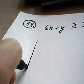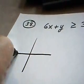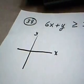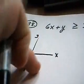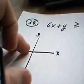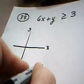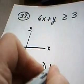6x plus y is greater than or equal to 3. Now eventually, we are going to solve this on a piece of graph paper where we have an x-axis and a y-axis. And our solution is going to be the ordered pairs on this piece of graph paper that make this true. The best way to do that is to start off by telling a little lie. Step number one is tell a little lie.